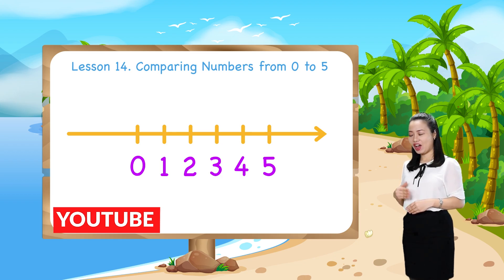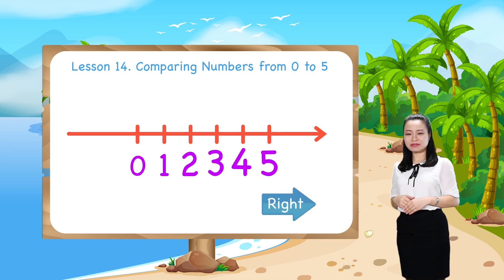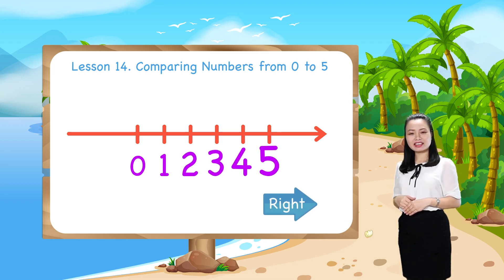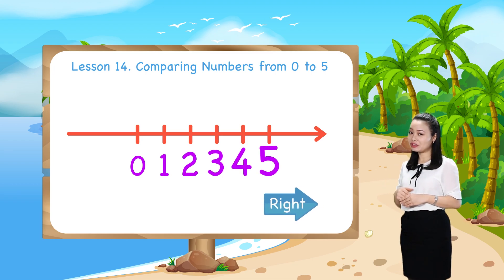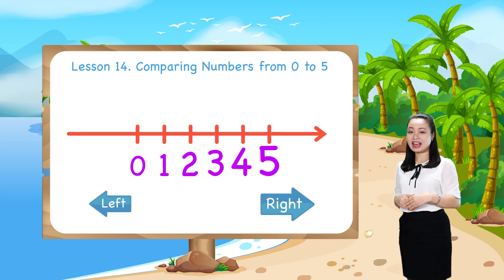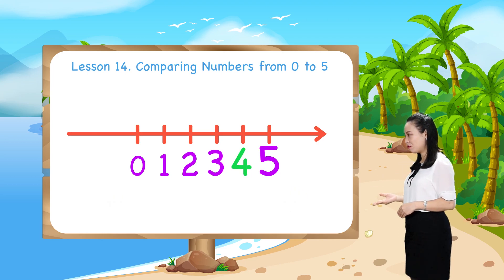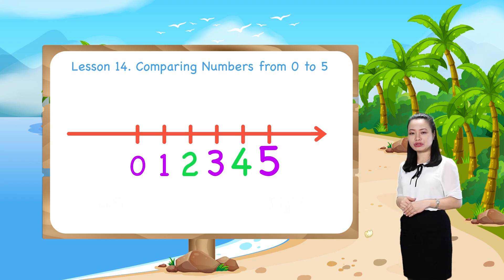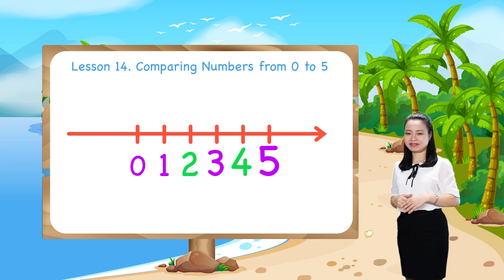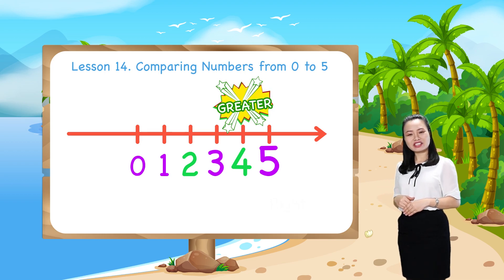Do you know that on the number line, a number to the right is greater than a number to the left? For example, number 4 is to the right of number 2, so 4 is greater than 2.